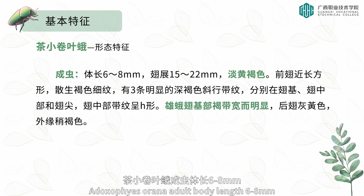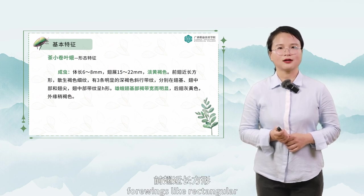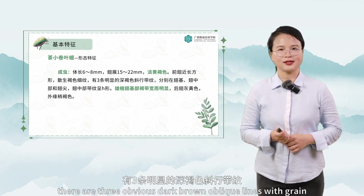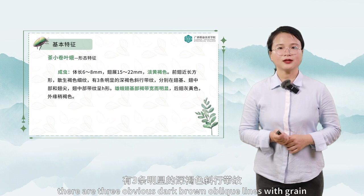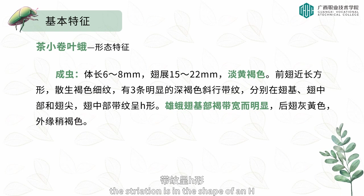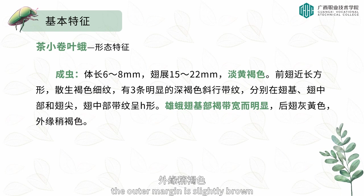Adoxiphes orana adults have a body length of 6 to 8 millimeters and a wingspan of 15 to 22 millimeters. The body is fawn-colored with four wings that are rectangular in shape, scattered with brown fine lines. There are three obvious dark brown oblique lines with grain at the base of the wing, the middle of the wing, and the outer margin — forming an H-shaped striation. The male's brown band is broad and obvious at the base of the wings, and the rear wings are grayish yellow with a slightly brown outer margin.